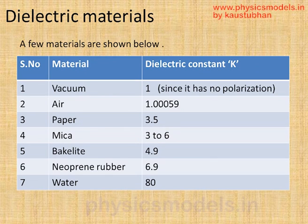For air, you can see it's almost 1 but slightly larger. And if we put paper, it becomes 3.5 and the K goes on increasing. If we put water in between those two plates, we can get a capacitance that is 80 times that of vacuum. That's the importance of the dielectric constant.